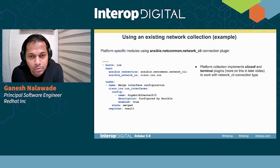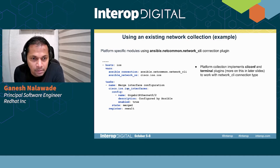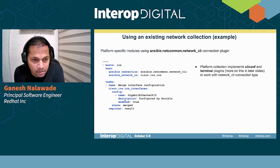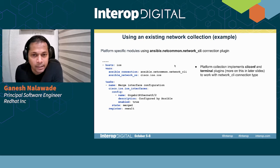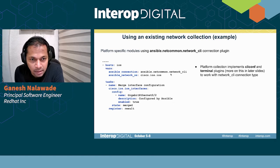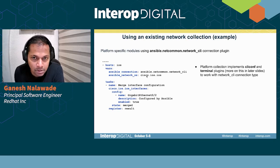If I want to use a module specific to a collection, here is an example using the ios_interfaces module from the cisco.ios collection. It takes a config list of interfaces with parameters such as name, description, and enabled, and the state is set to merged, so this configuration will be merged onto the existing configuration on the device. The connection type used is network_cli and ansible_network_os is set to cisco.ios.ios.